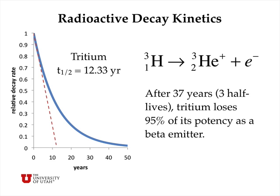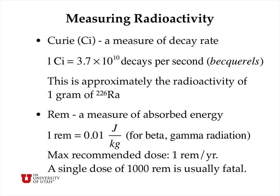All radioactive decay events decay by first-order kinetics. That's a consequence of the fact that nuclei decay spontaneously in an isolated sense and don't need to interact or collide with other things around them. The decay rate decays exponentially, and tritium will decay spontaneously to helium-3 and a beta particle with a half-life of 12.33 years. So after 37 years, or three half-lives, tritium loses about 95% of its potency as a beta emitter.